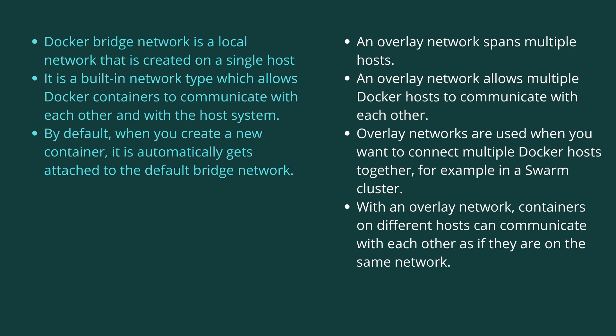On the other hand, an overlay network spans multiple hosts. An overlay network allows multiple Docker hosts to communicate with each other. Overlay networks are used when you want to connect multiple Docker hosts together, for example, in a swarm cluster. In such an overlay network, containers on different hosts can communicate with each other as if they are on the same network.